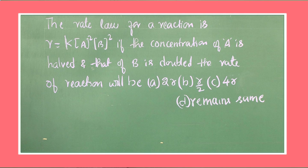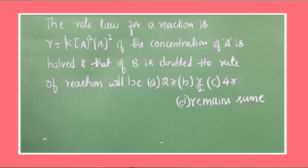The next question: the rate law for a reaction is R = K[A]²[B]². If the concentration of A is halved and that of B is doubled, the rate of the reaction will be?